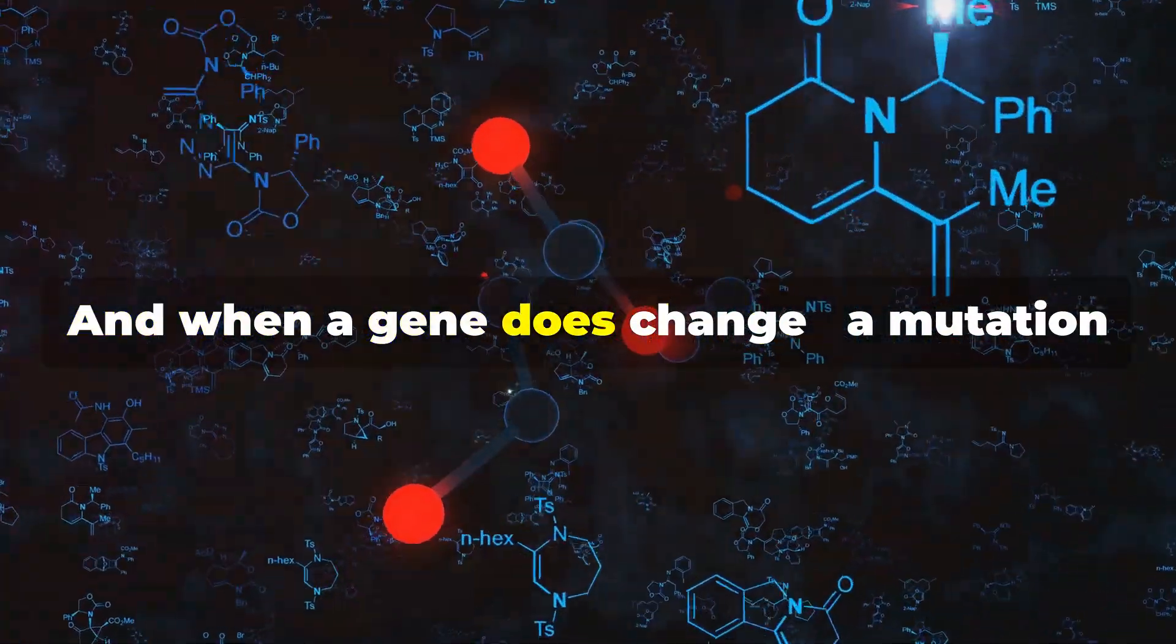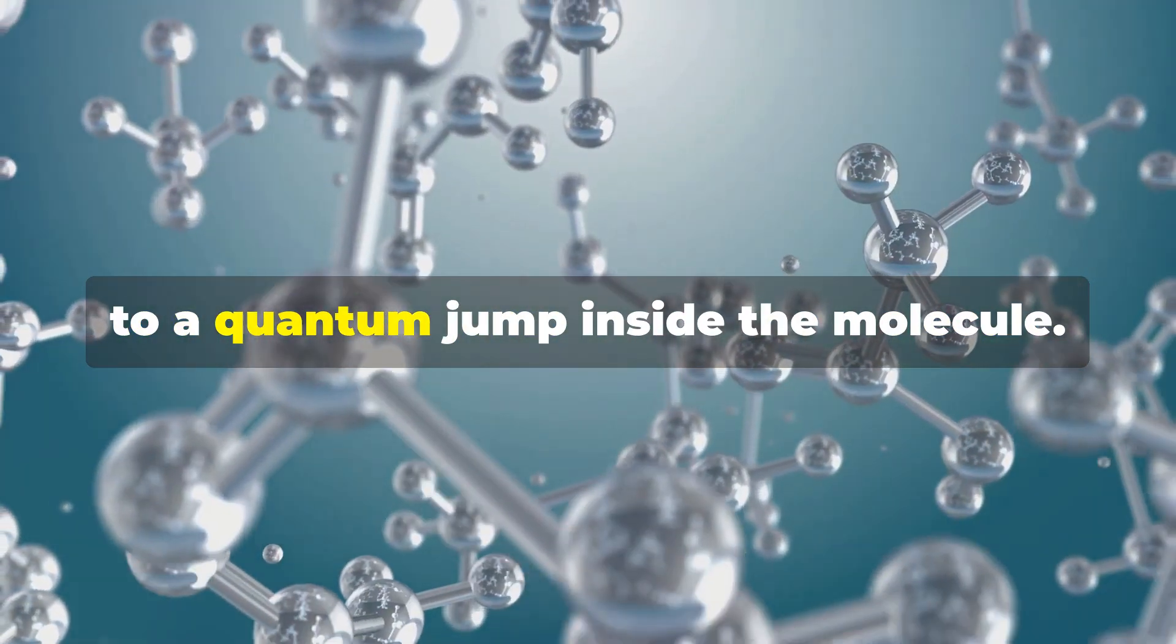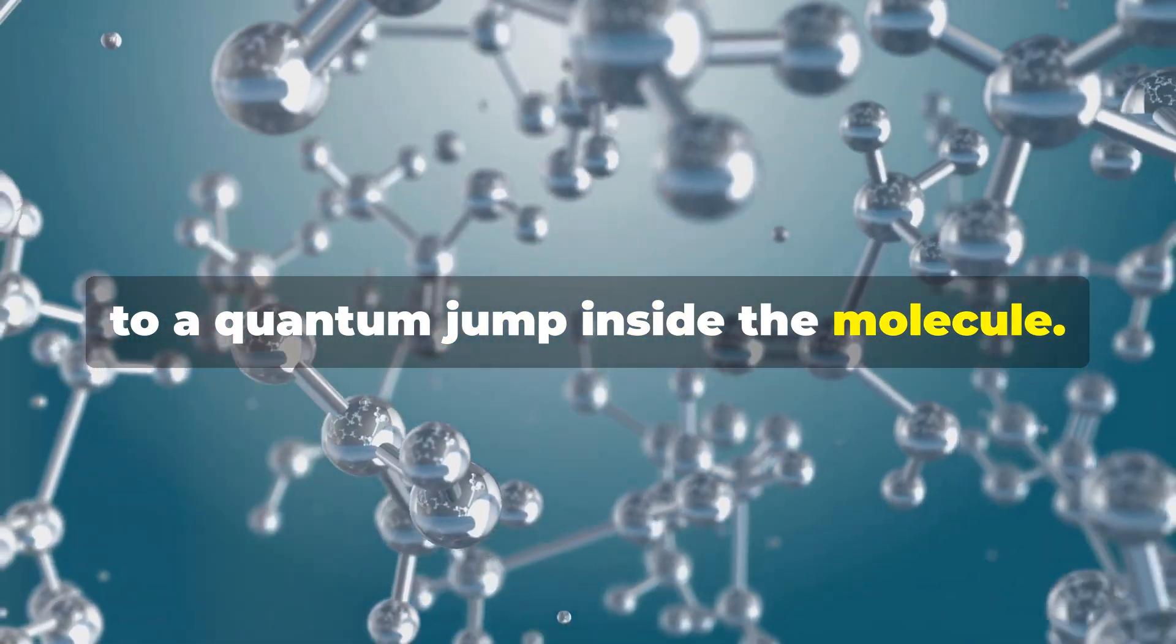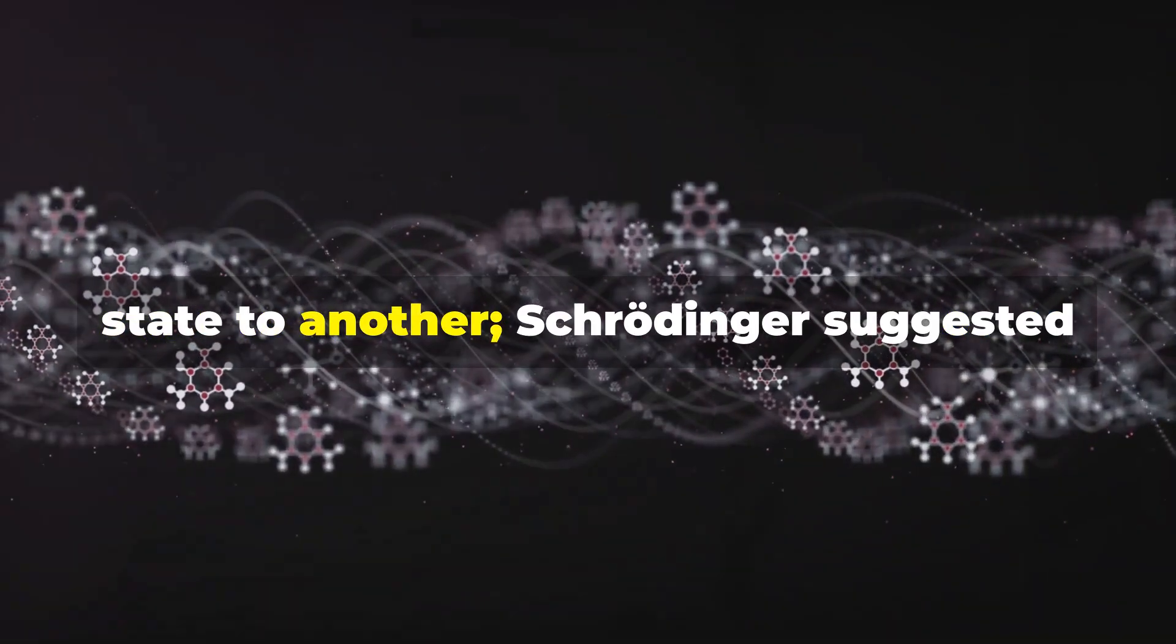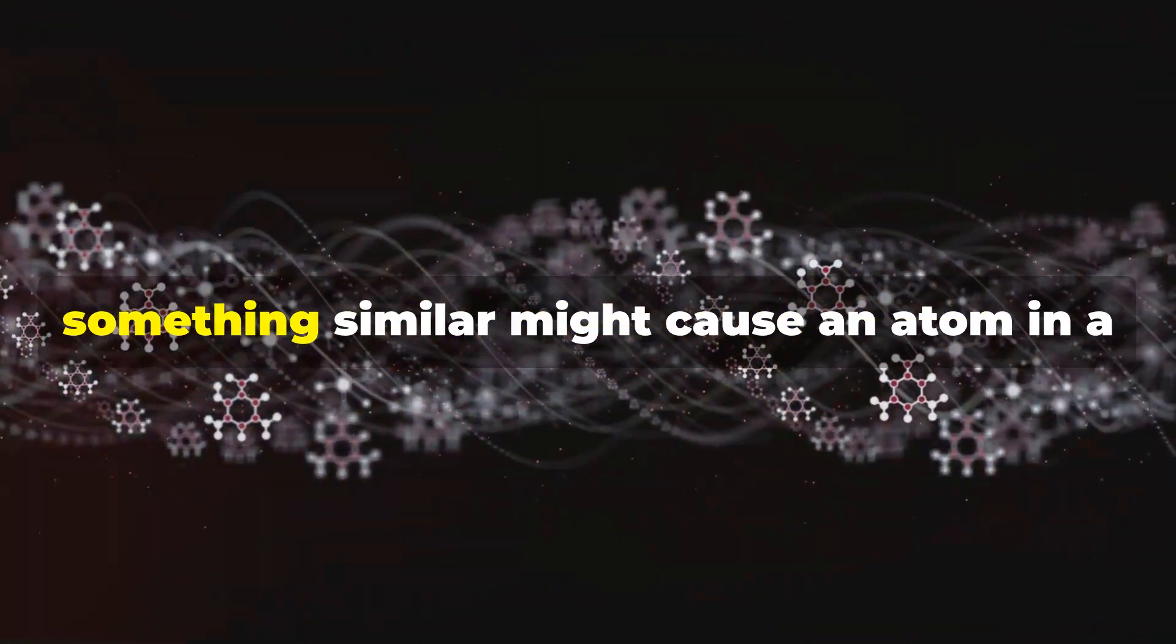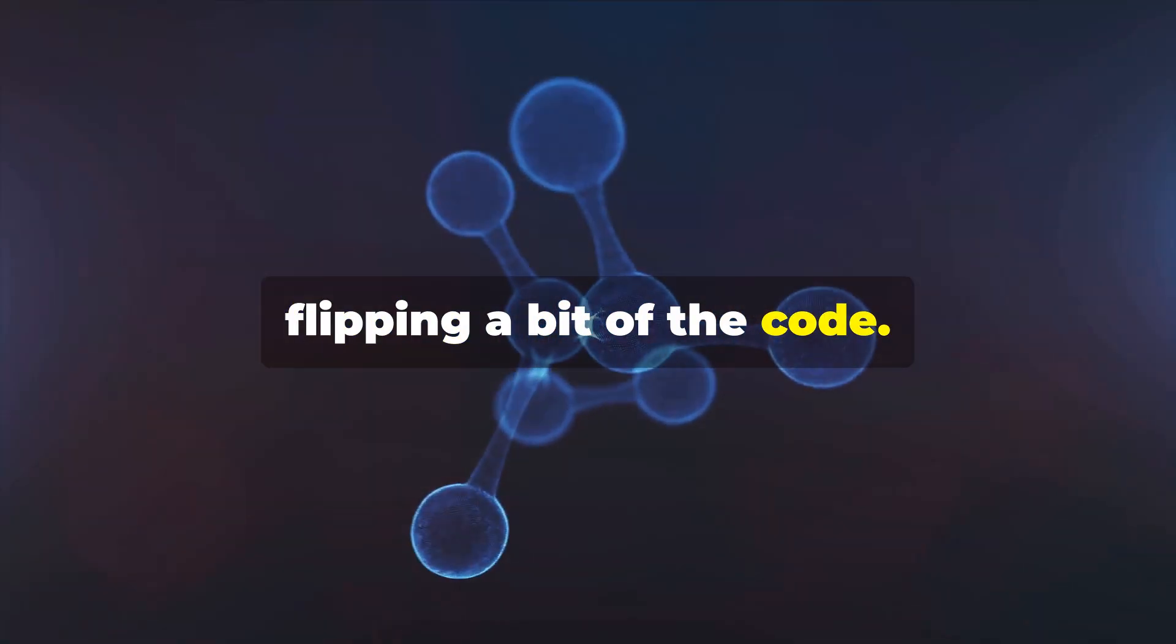And when a gene does change, a mutation, it might happen due to a rare event akin to a quantum jump inside the molecule. In quantum physics, an electron can jump from one energy state to another. Schrödinger suggested something similar might cause an atom in a gene to shift, flipping a bit of the code.